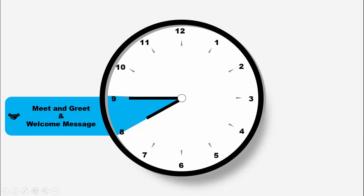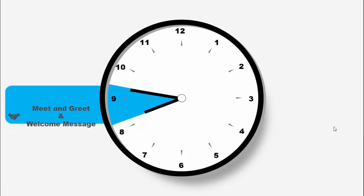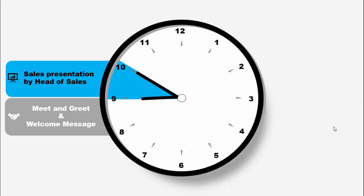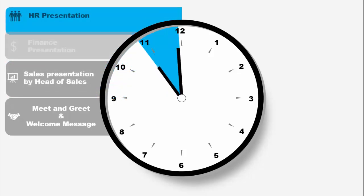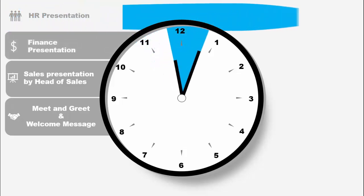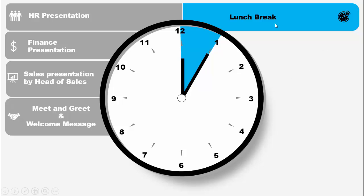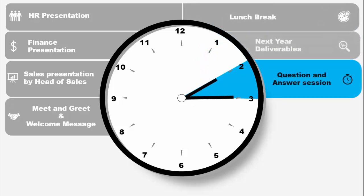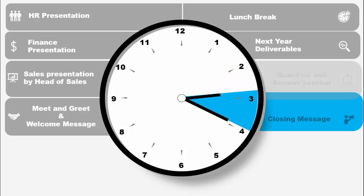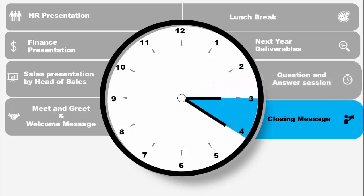When I click it will show the next agenda. From 9 to 10 a.m. we have a sales presentation by the head of sales, then from 10 to 11 we have finance presentation, then HR presentation, then from 11 to 1 it's a lunch break. From 1 to 2 we discuss next year deliverables, then a Q&A session from 2 to 3 p.m., and then we close the meeting. You can add as many agenda items as you want, even 30-minute sessions.